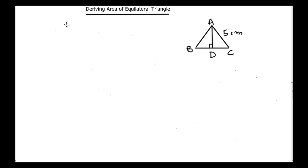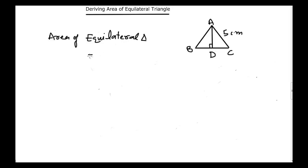Hello guys. This video is about deriving the area of equilateral triangles. We know that the area of any given equilateral triangle is equal to square root of 3 divided by 4 times side squared. If we are given the side of any equilateral triangle, we can find its area by using this formula.